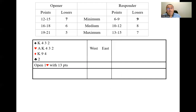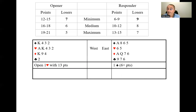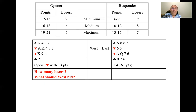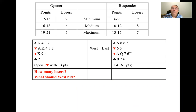Here's another example: you open one heart with 13 points and your partner bids one spade — so you haven't found a fit yet and don't use the losing trick count. That one spade bid just means they don't have four hearts, they've got four spades, and shows at least six points. However, opener can now switch to using the losing trick count because there's a fit in spades. We have a poll question: how many losers does West have, and what should West bid?